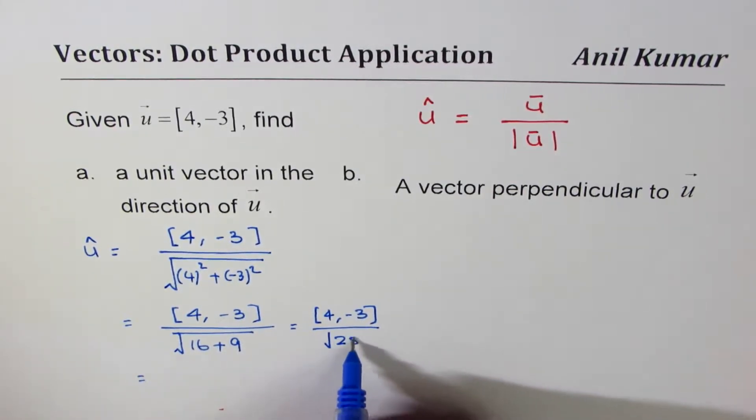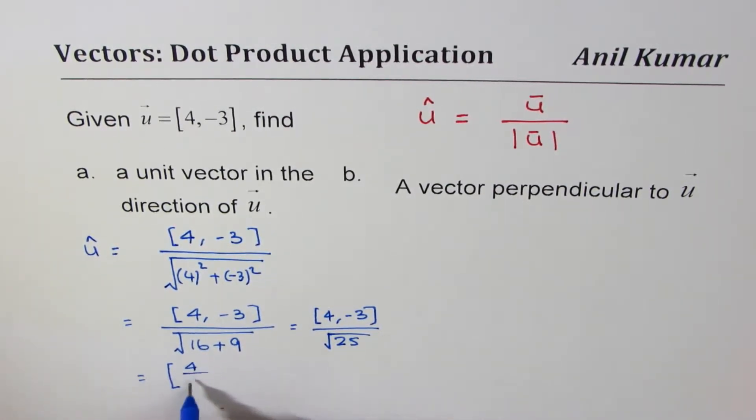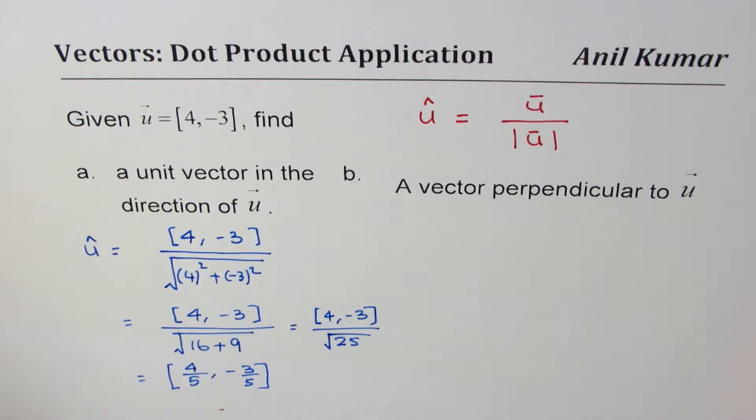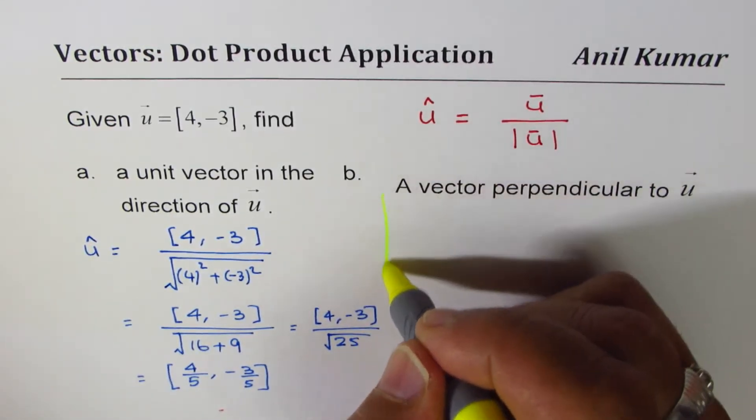So I could write this as [4/5, -3/5]. That becomes the unit vector û in the direction of u.